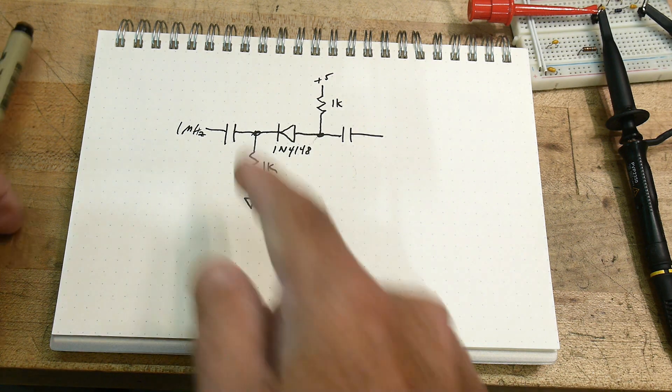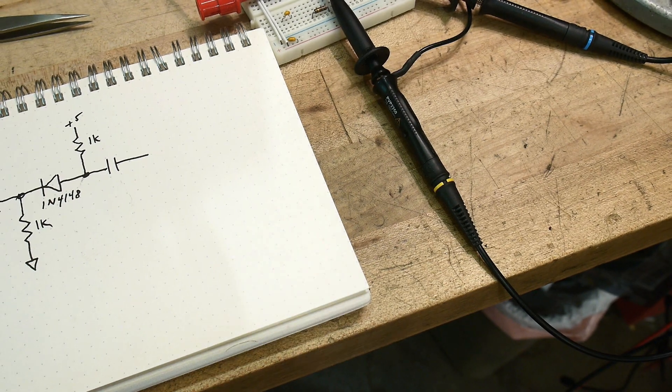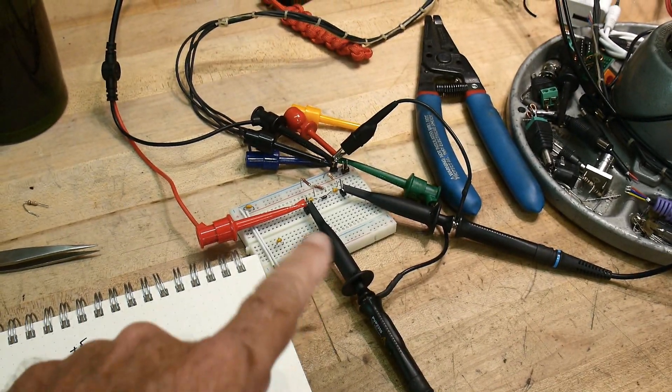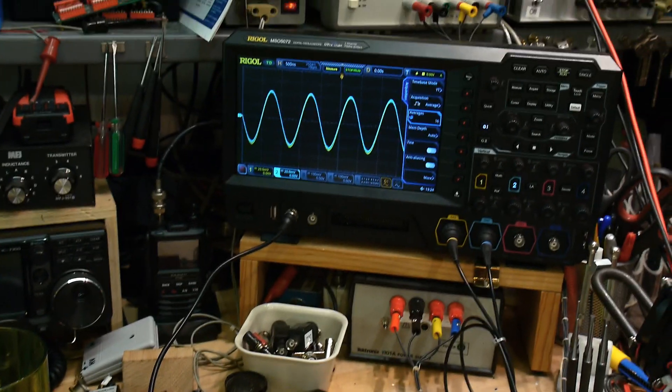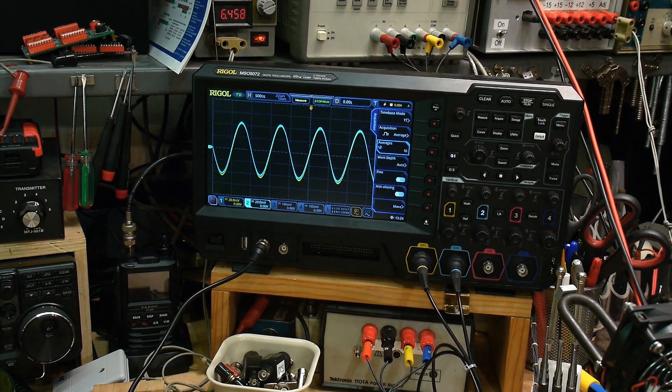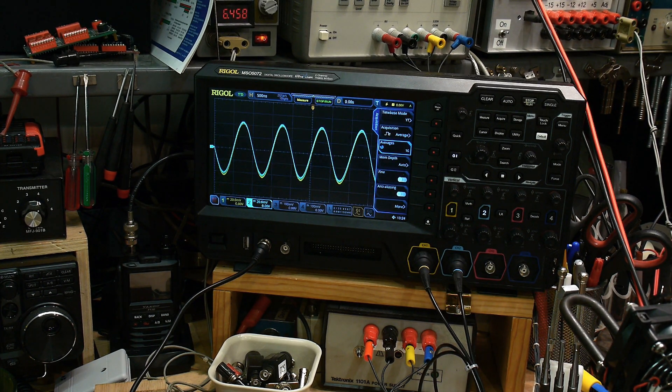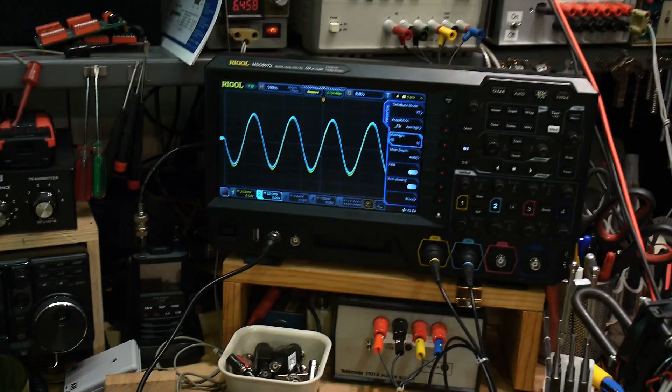So I have a scope probe hooked up. I have the little circuit here, and there we go. We have a yellow trace and a blue trace, and the yellow trace is the input and the blue trace is the output, so they're exactly the same. So what does that mean?